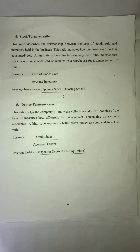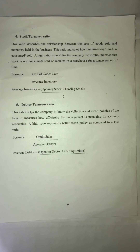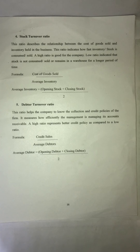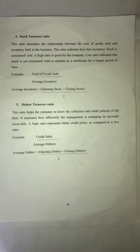The formula for finding the Debtors Turnover Ratio is: Credit Sales divided by Average Debtors. Average debtors are calculated as opening debtors plus closing debtors divided by 2. If there is no opening debtor in the question, then average debtor will simply be the closing debtor.